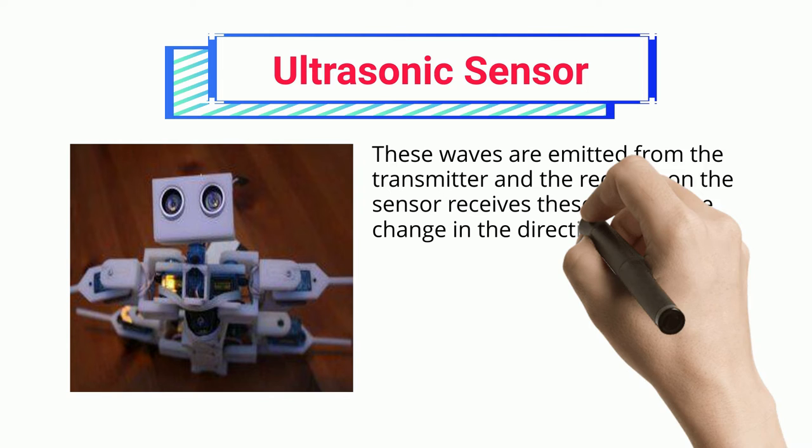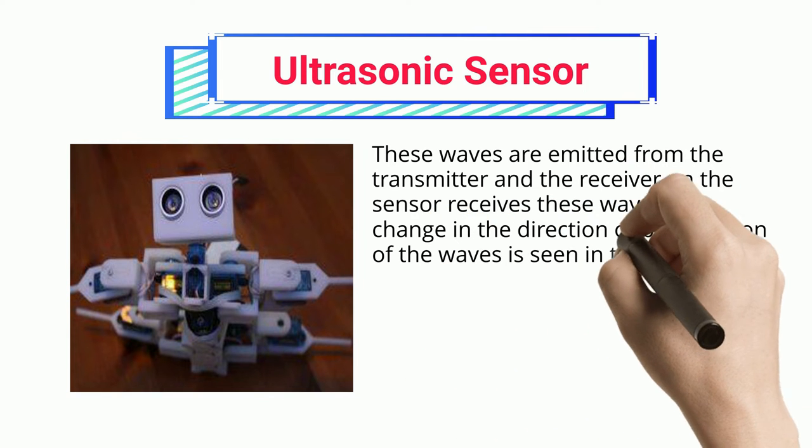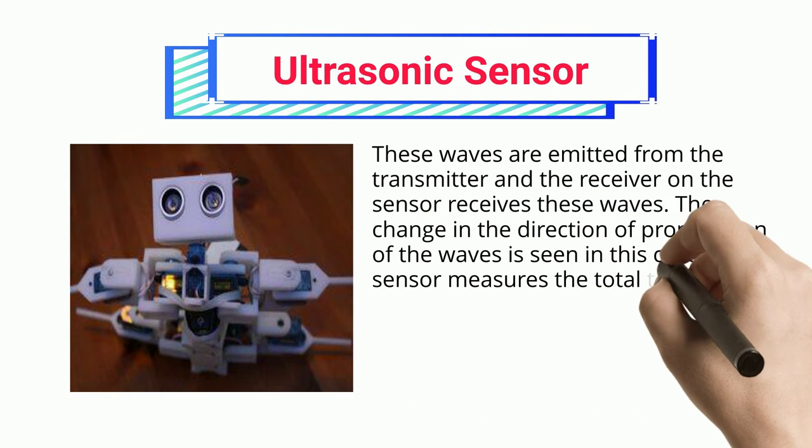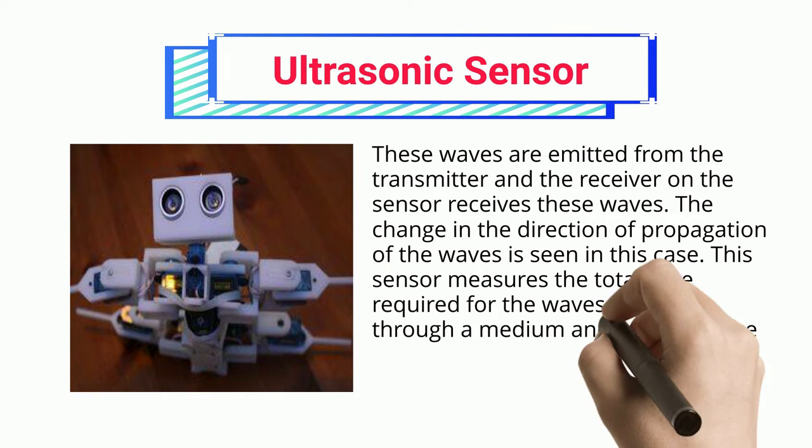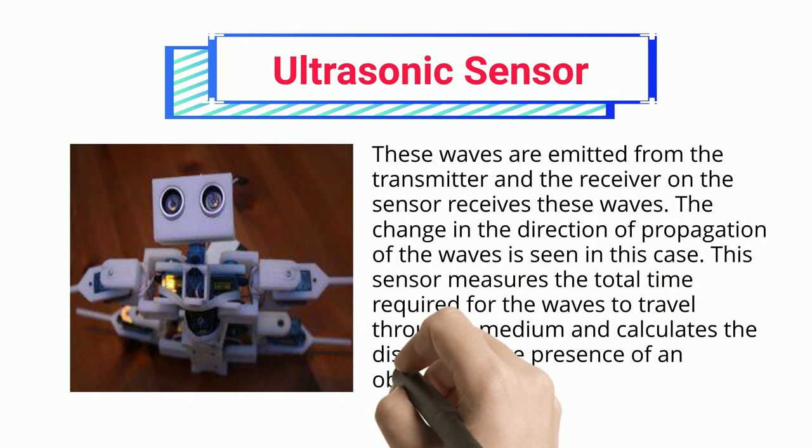These waves are emitted from the transmitter and the receiver on the sensor receives these waves. The change in the direction of propagation of the waves is seen in this case. This sensor measures the total time required for the waves to travel through a medium and calculates the distance of the presence of an obstacle.